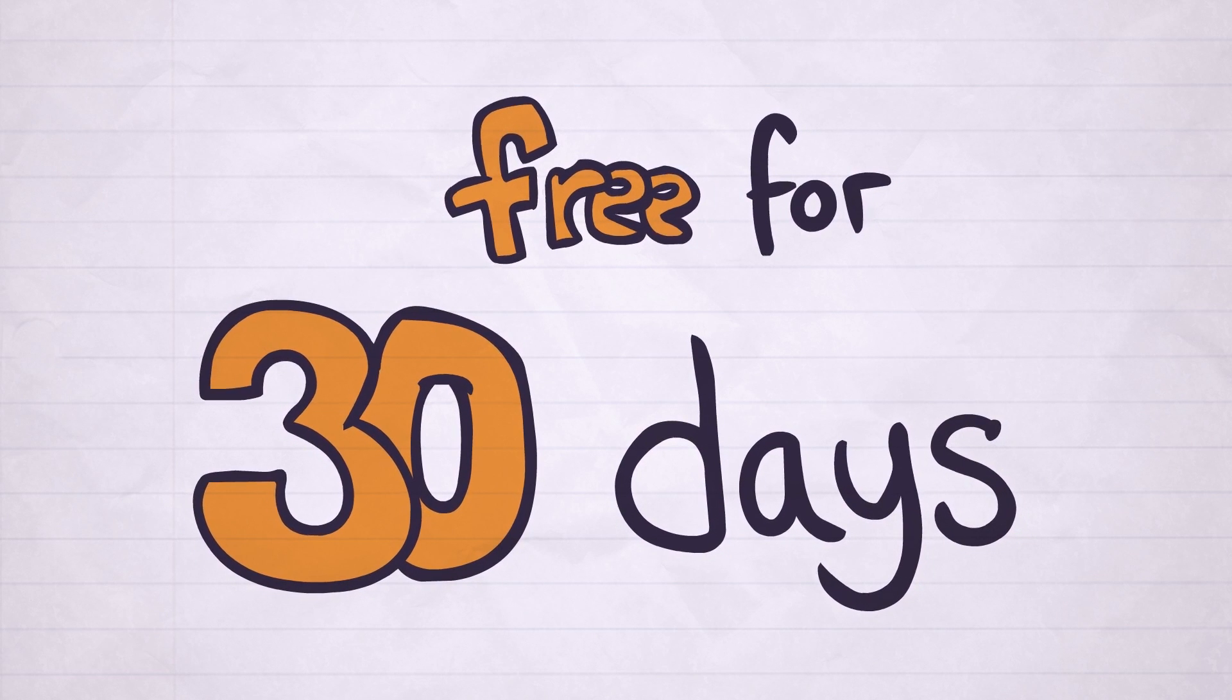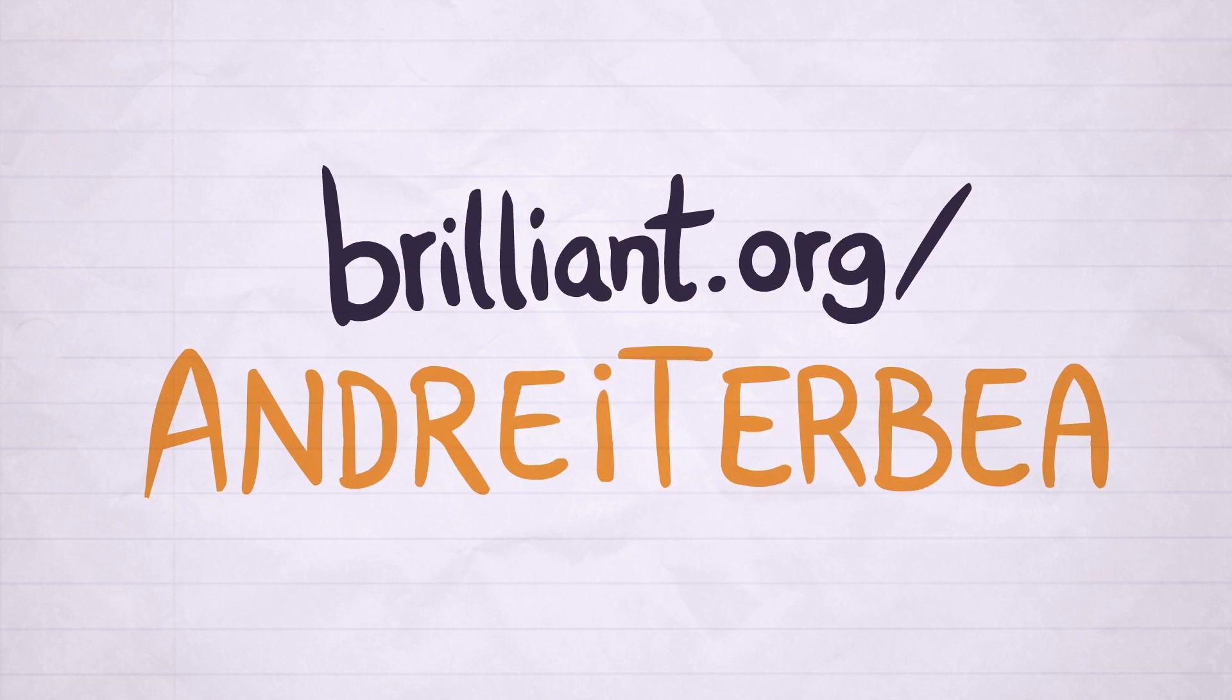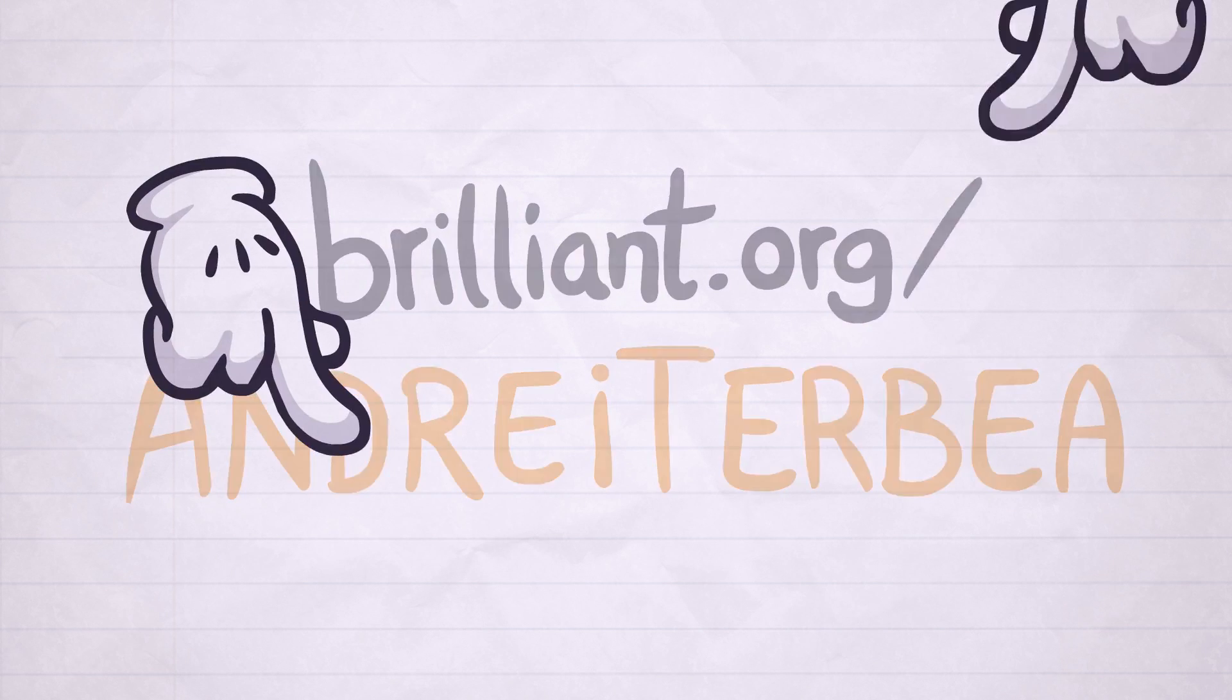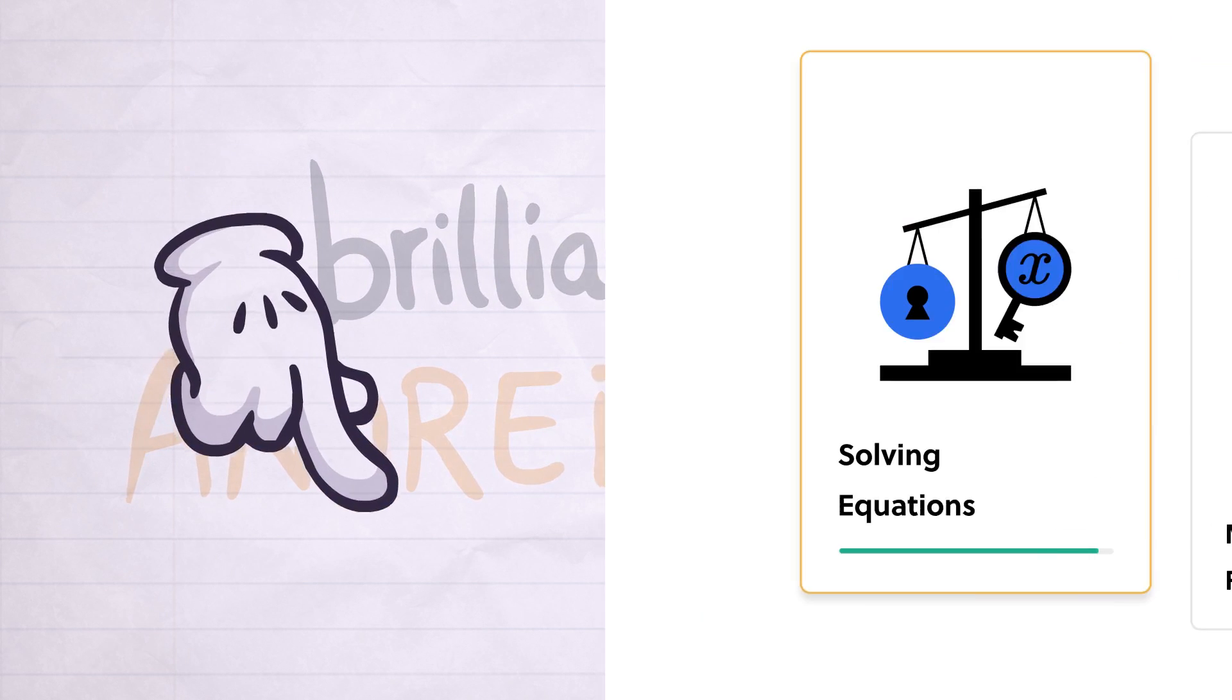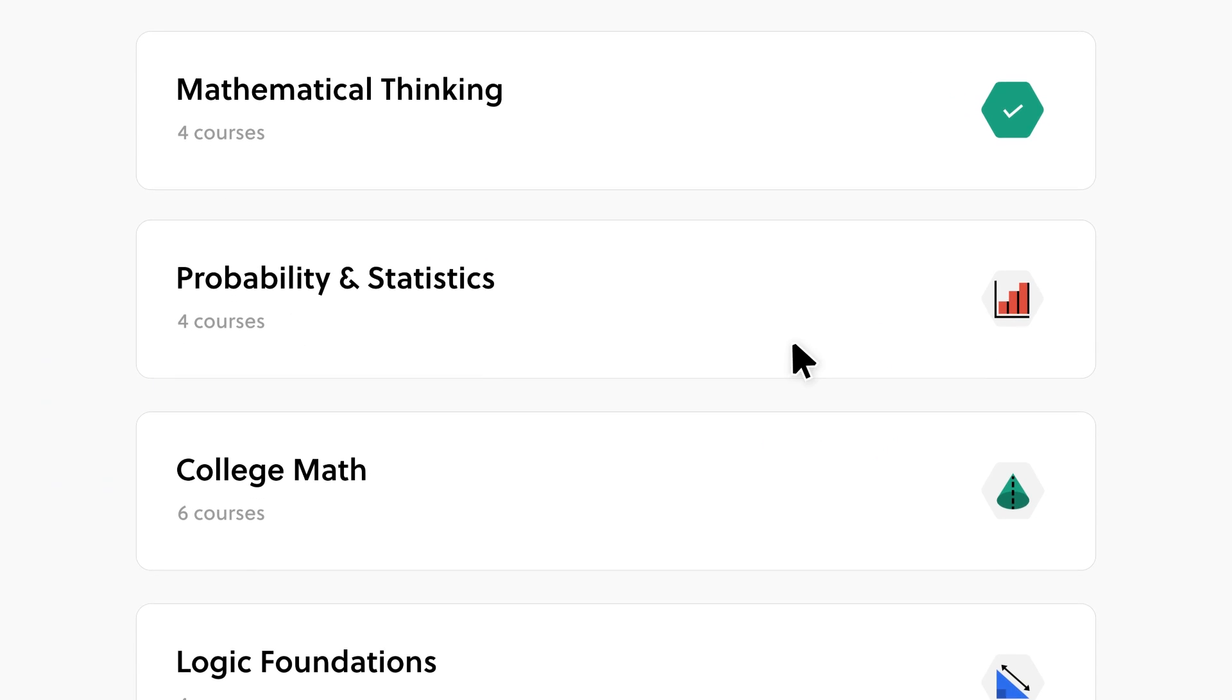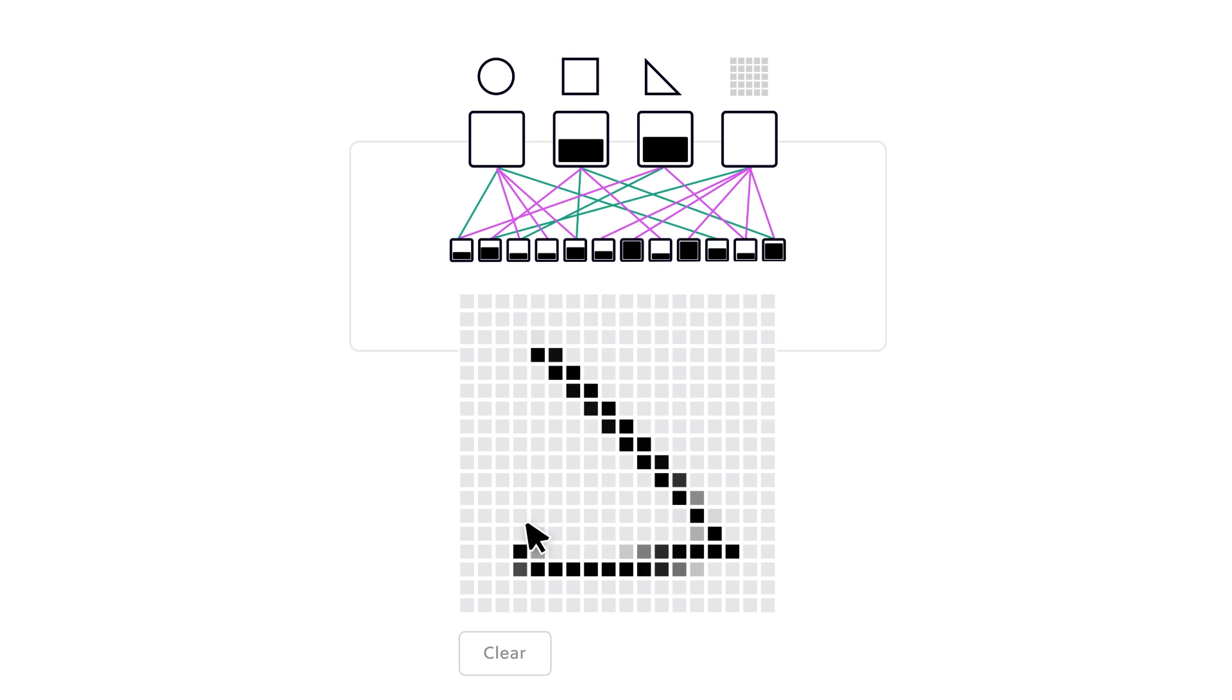You can try Brilliant for yourself completely free for a full 30 days by visiting brilliant.org slash Andrei Terbea, that's A-N-D-R-E-I-T-E-R-B-E-A, or by clicking the link down in the description. The first 200 of you will get 20% off Brilliant's annual premium subscription. A big thank you to Brilliant for sponsoring us. Now let's get back into the video.